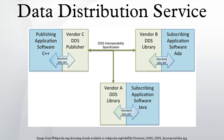DDS is networking middleware that simplifies complex network programming. It implements a publish-subscribe model for sending and receiving data, events, and commands among nodes. Nodes that produce information create topics and publish samples. DDS delivers the samples to subscribers that declare an interest in that topic. DDS handles transfer chores such as message addressing, data marshalling and demarshalling, delivery, flow control, and retries. Any node can be a publisher, subscriber, or both simultaneously. The DDS publish-subscribe model virtually eliminates complex network programming for distributed applications.